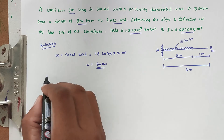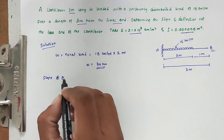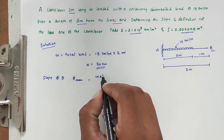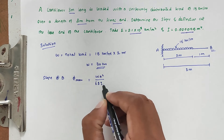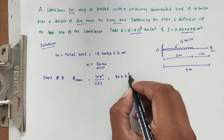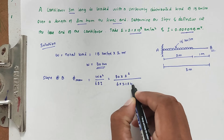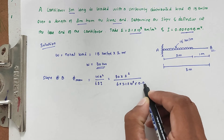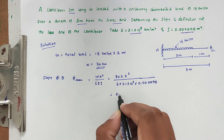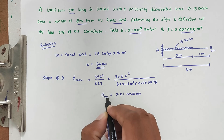Now we find the slope at B. The formula is: slope equals W·a² divided by 6EI. Substituting: W is 30, a is 2, so a² is 4, divided by 6 into E = 2.1 × 10⁸ into I = 0.000095. Solving this, we get a slope of 0.01 radians.